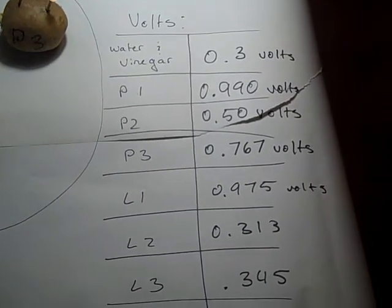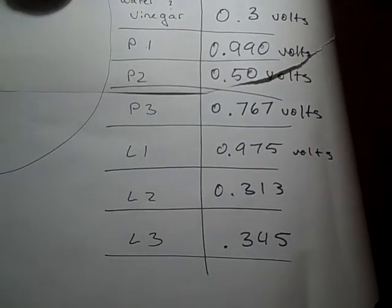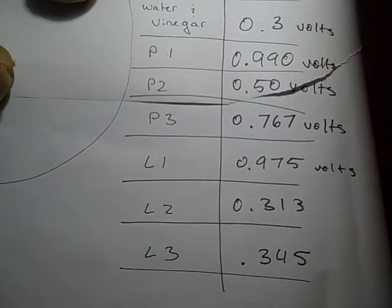And the water and vinegar was only 0.3. That was the smallest. And the lemons had one of the lowest averages.